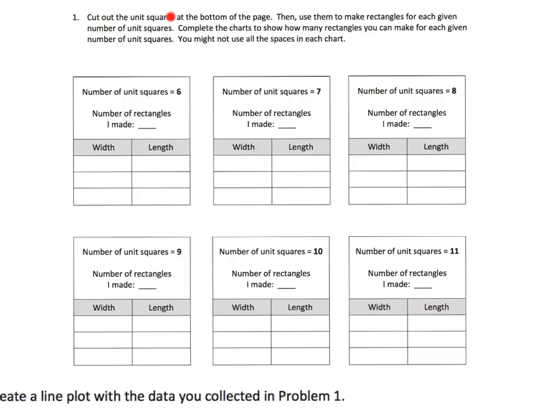All right, so the directions say to cut out the unit squares at the bottom of the page. Well wait a second, we don't really need to use those unit squares because we know our times tables and that's the whole point. Our multiplication facts, and that's the whole point of this process, has been to understand that when you have an area of a number of unit squares, in this case let's say six, in order to find all the rectangles, all you have to do is think of your multiplication facts.